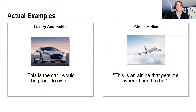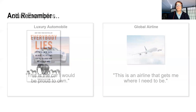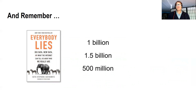Some examples: 'This is a car I would be proud to own' — meaning someone like me would be happy to talk to a friend about owning this car. Or for a global airline: 'This is the airline that gets me where I need to be — people like me have to go places.' A simple survey question like that can tell you a lot more than some of the longer surveys.